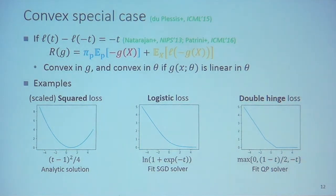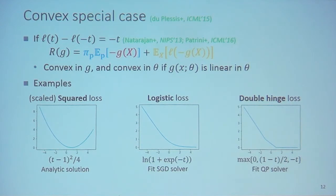If the linear-odd condition is satisfied, the resulting objective is convex in G. If G is linear in the parameters, the overall optimization becomes a convex optimization where we can obtain the globally optimal solution. Loss functions satisfying this condition include the square loss, logistic loss, and double hinge loss, and we can use different optimizers to solve it.